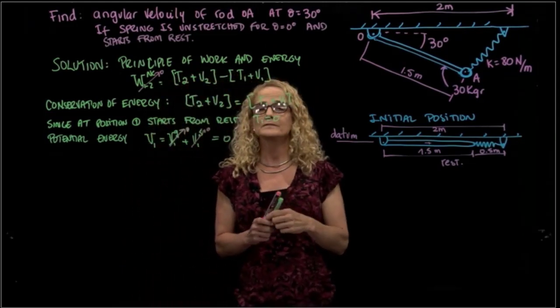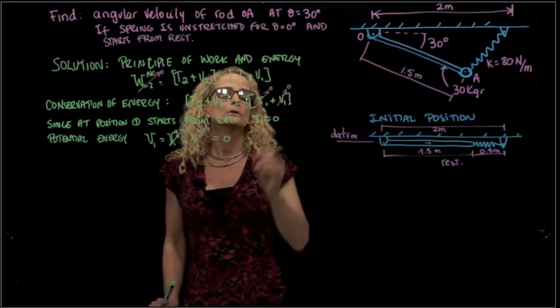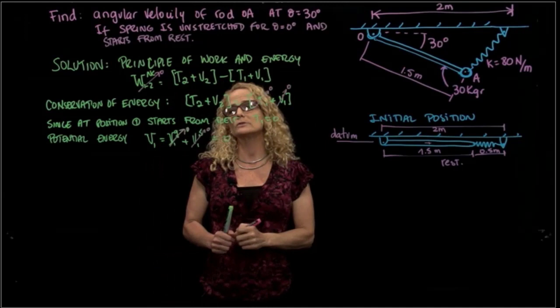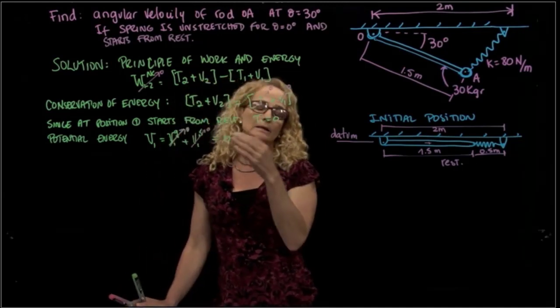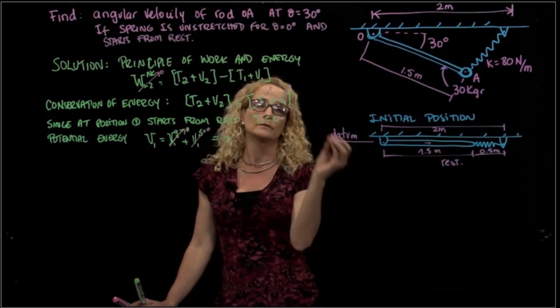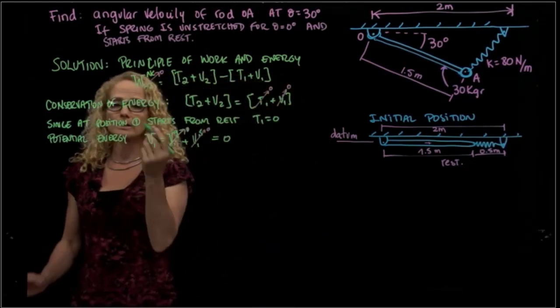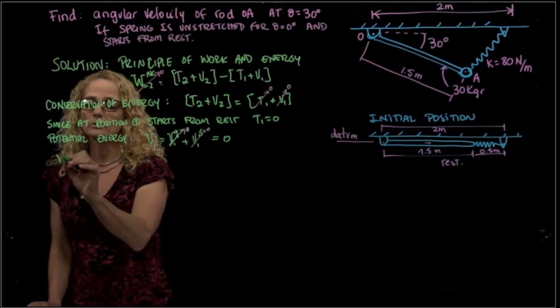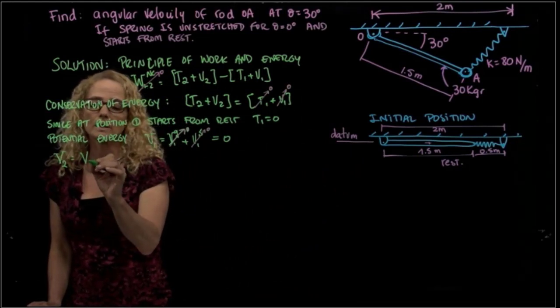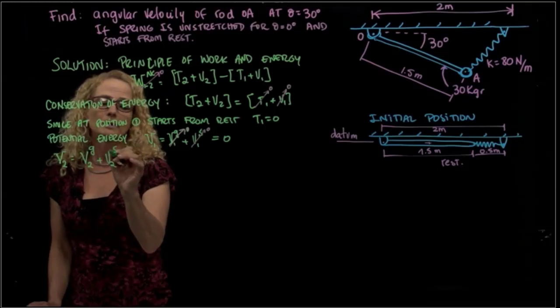So actually, we have 0 energy in the initial position. So those two are 0. So we can say that the kinetic energy plus the potential energy in the second position has to be 0 as well. So let's find out the potential energy in position 2.